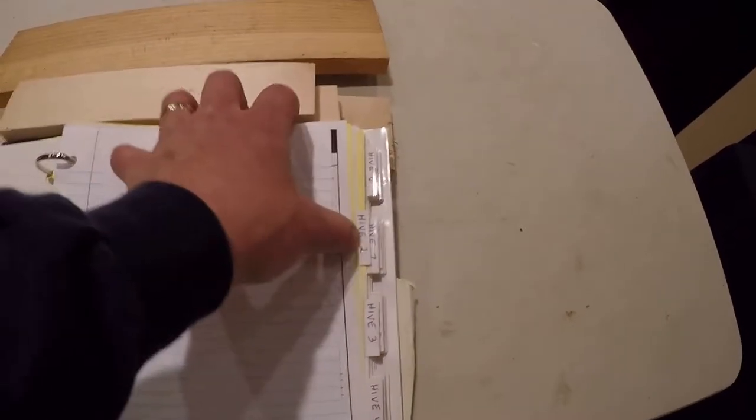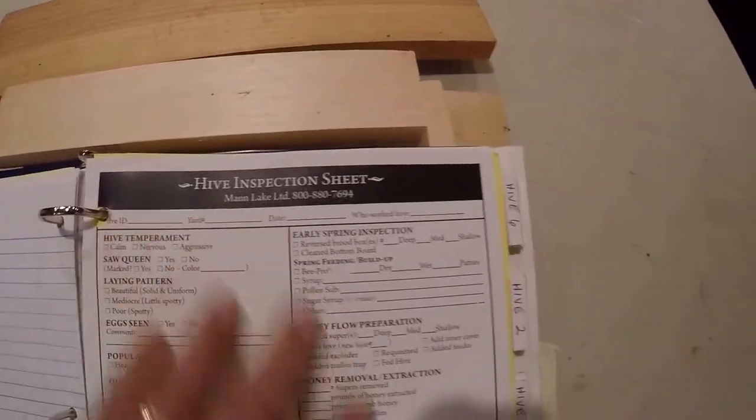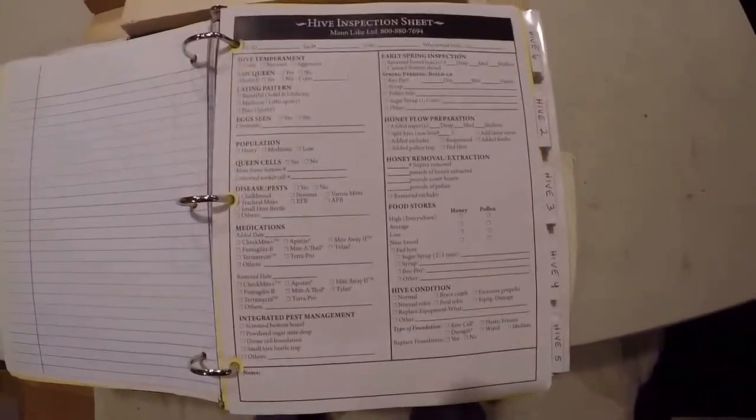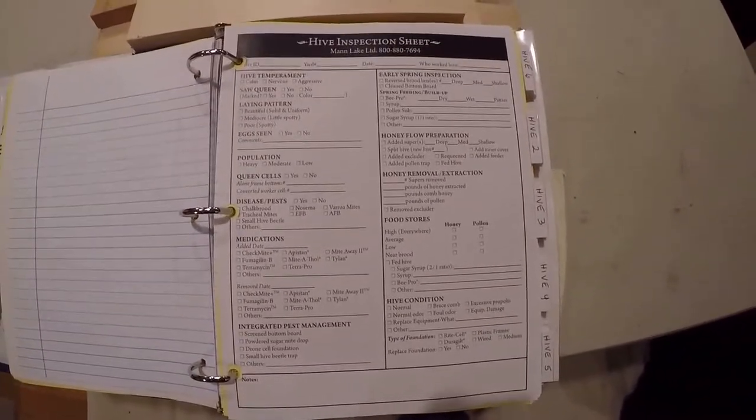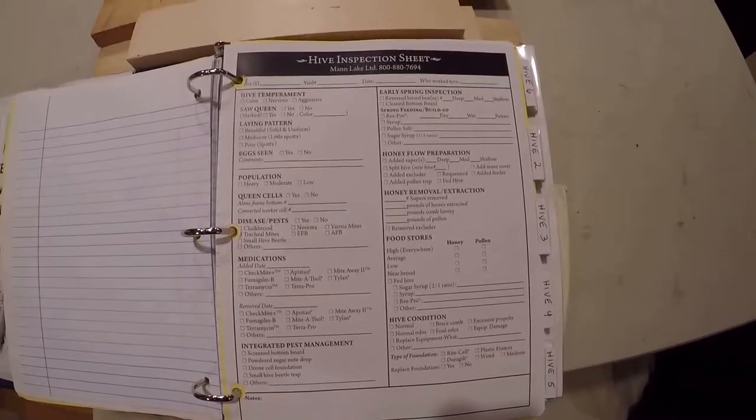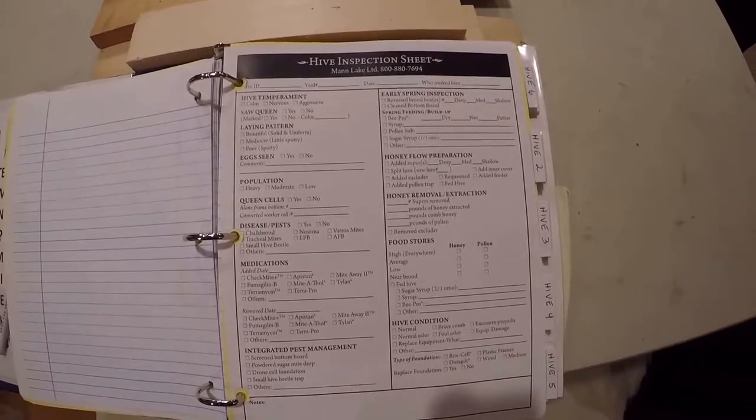I happen to find online, Mann Lake has hive inspection sheets, so I copied it to Word document, printed it out, and you have the full sheets of information here. If you decide to utilize this, I'd highly suggest that you understand it, read it a few times, and know what information is on these sheets.